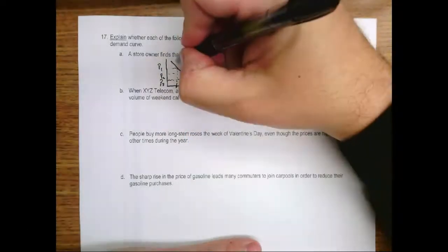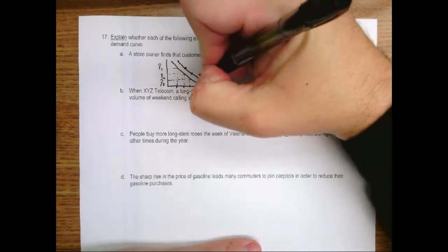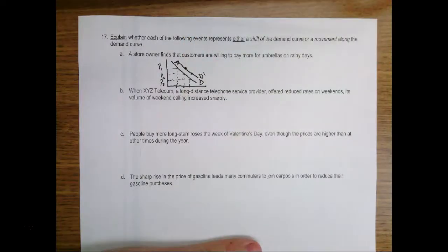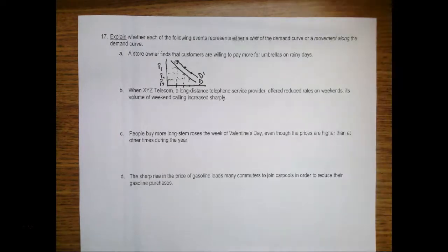And it's creating a new demand curve that has shifted to the right. What we're seeing here is a change in people's tastes and preferences. They now prefer umbrellas more because it's raining outside than they did before. And so we see a shift.